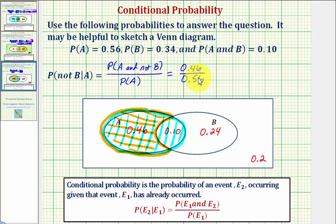Let's first clear the decimals from our fraction, so we can multiply by 100 over 100, which would give us 46 over 56, but now we have a common factor of two, so we can divide the numerator and denominator by two. So the simplified probability as a fraction would be 23 over 28.